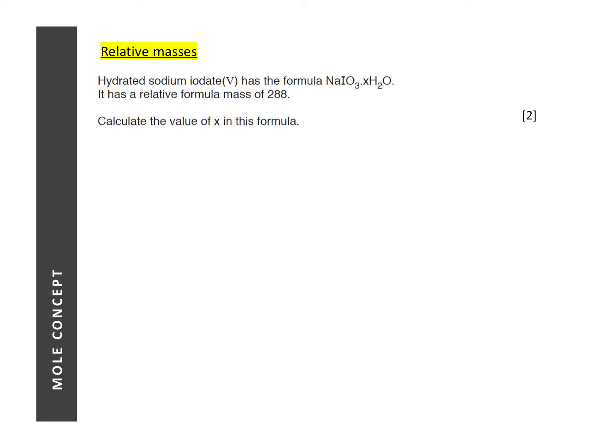For this question, we are given the formula of a hydrated salt, hydrated sodium iodate. So the question requires you to find the value of X. And the question gives you the formula mass of the entire compound to be 288. So the key thing to remember now is how do we obtain the formula mass is by summing up all the atomic masses.